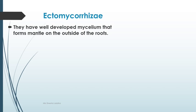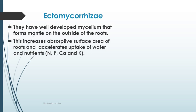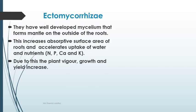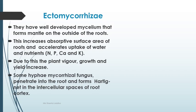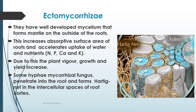Ectomycorrhizae have well-developed mycelium that forms a mantle — a covering on the outside of the root. They increase the absorptive surface area of the roots, accelerating uptake of water and nutrients like nitrogen, phosphorus, calcium, and potassium. Due to this, plant vigor, growth, and yield increase. Some mycorrhizal fungal hyphae penetrate into the root and form a Hartig net in the intracellular spaces of the root cortex.